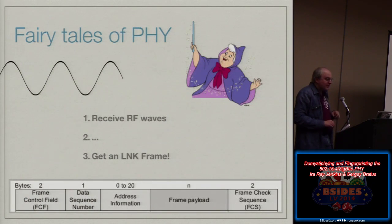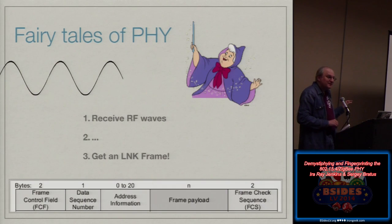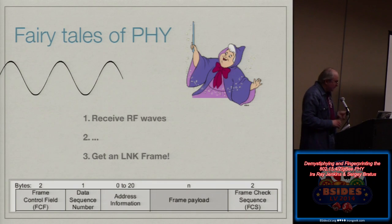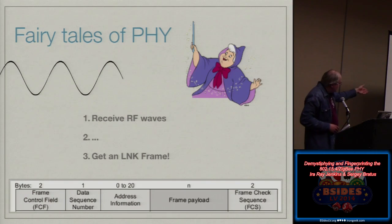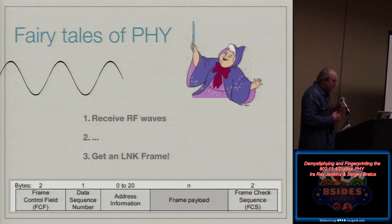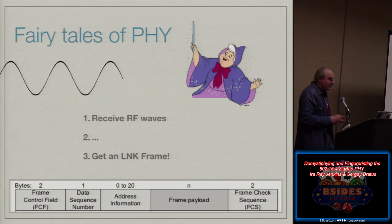To quote Travis, there is this profession: liar to children. Some people call it teacher. You hear that there are things called frames — link layer frames — and you see nice diagrams of those frames: here is the frame control field, two bytes; here is the data sequence number; here is a bunch of MAC addresses and the payload; and the frame check sequence at the end. But those things don't exist. They're a lie. They're a fairy tale.